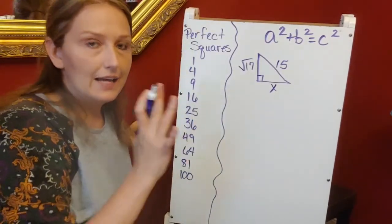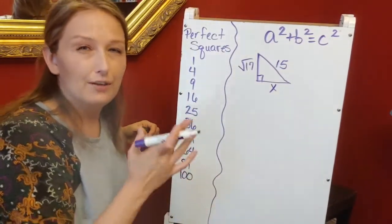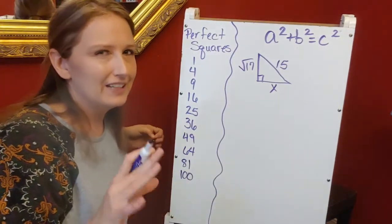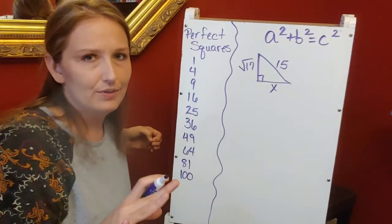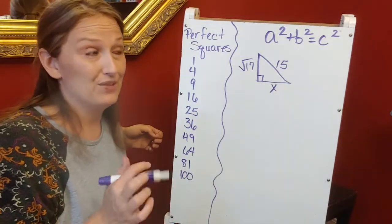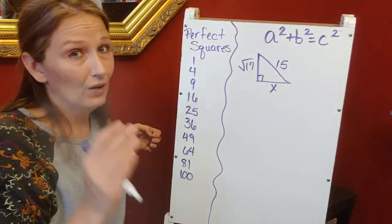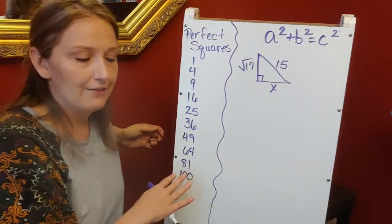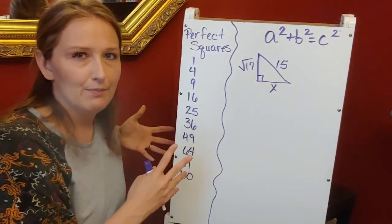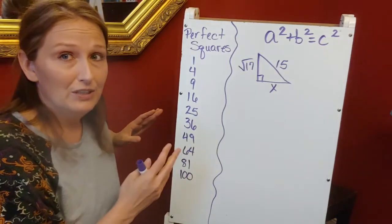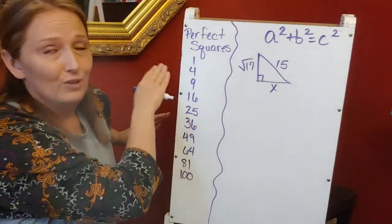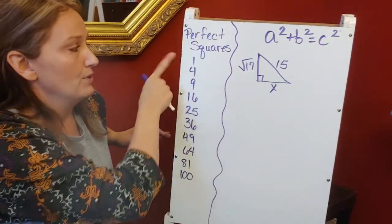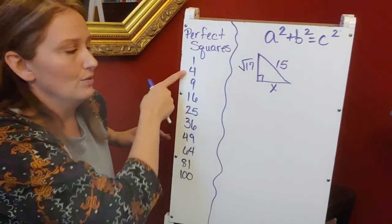Lastly, you have triangles where you have to find missing sides, and you're told to leave answers in simplest radical form. That means we're simplifying radicals. My perfect squares: 1×1=1, 2×2=4, 3×3=9, 4×4=16, 5×5=25, all the way through 100.